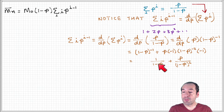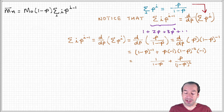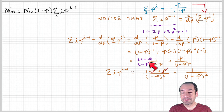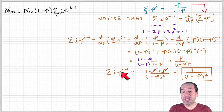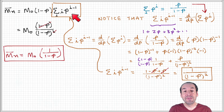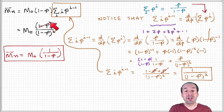Combining those terms, the derivative is one over one minus p plus p over one minus p squared. Multiplying the top and bottom of the first term by one minus p and combining, we get that the summation of i times p to the i minus one equals one over one minus p squared. Now we can substitute this into our number average molecular weight equation.